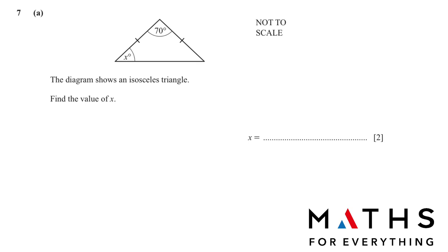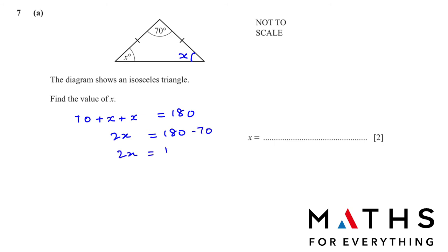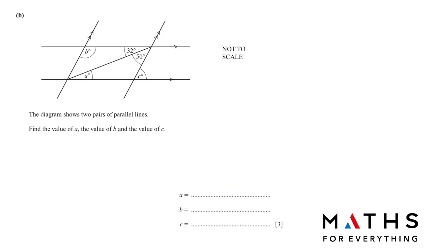Question 7a: the diagram shows an isosceles triangle. Find the value of x. An isosceles triangle has two equal sides, so the opposite angles are also equal. The angle sum property tells us all angles add to 180°. So: 70 + x + x = 180, giving 2x = 110, therefore x = 55 degrees.